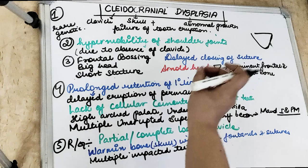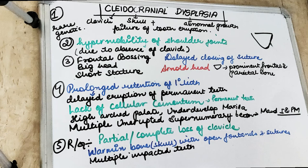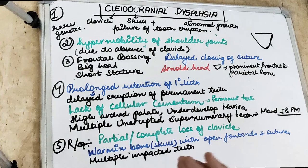Because of the abnormality in the skull, there is delayed closing of the sutures. So there is a big head, frontal bossing, and delayed closing of the sutures. In radiographs, we see open sutures and open fontanelles. The suture lines are very tortuous and curvy in the skull — we call these Wormian bones, with open fontanelles and open sutures.